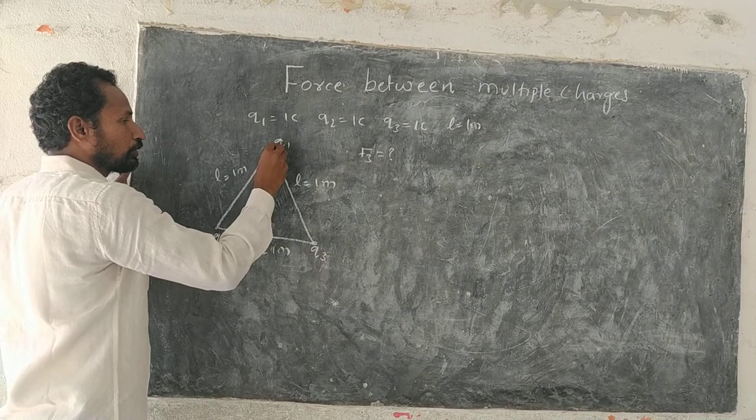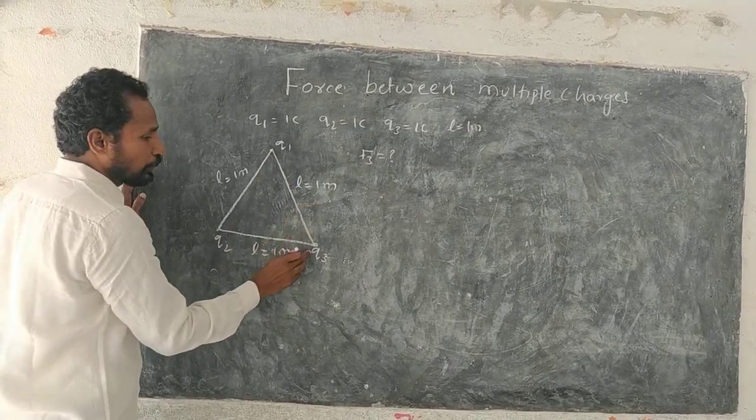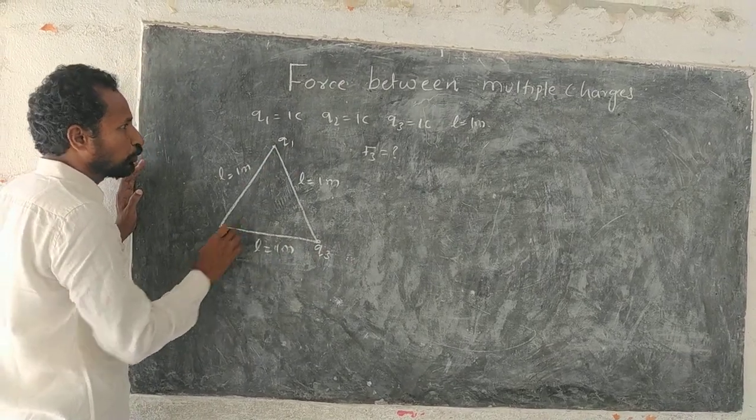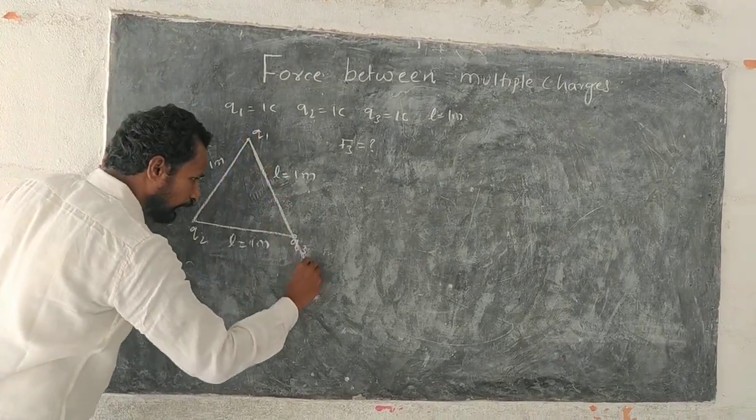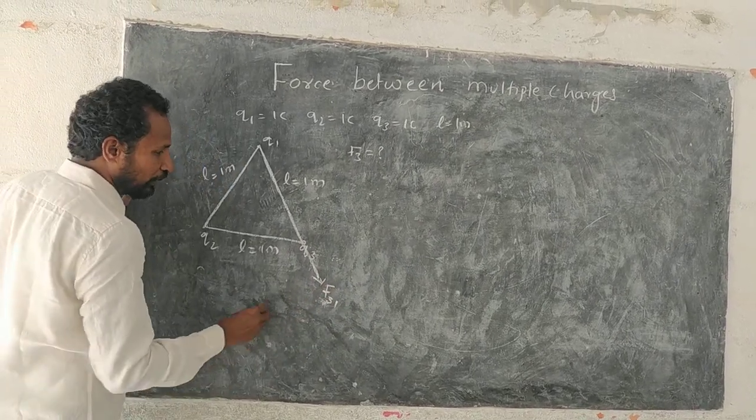we need to decide the directions. Which directions? Force directions. So Q3 experiences force due to Q1, Q3 experiences force due to Q2, and this Q1 force on Q3 will act like this. We will give the convention F31,